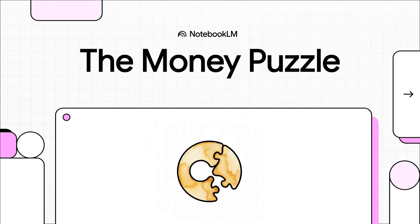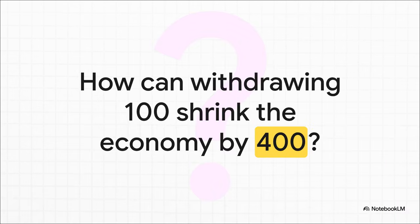Alright, let's dive into a money puzzle that honestly seems to defy all common sense. We're talking about a simple action that you'd think has a simple effect, but it really doesn't. Once you see how all the pieces fit together, you are never going to look at your bank account the same way again. So here's the puzzle: you go to the bank, you withdraw $100 in cash. You've got $100 more in your pocket, the bank has $100 less in its vault — a totally balanced one-for-one exchange. So how on earth can that single action cause the total amount of money in the entire economy to shrink by $400?